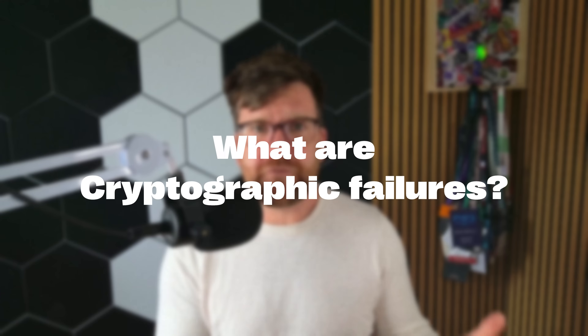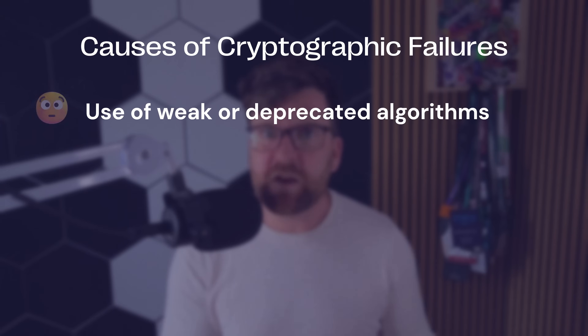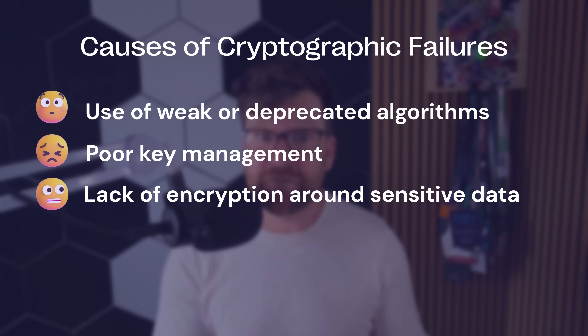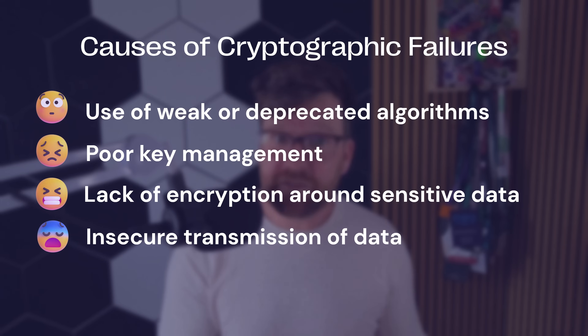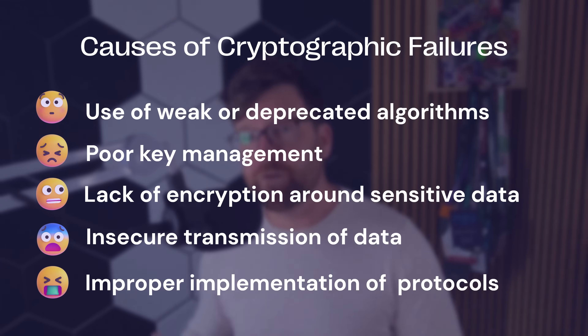As the name suggests, cryptographic failure is when we fail to encrypt something securely and someone else can access sensitive information. How does this really happen? It typically revolves around four different failings: use of weak or deprecated cryptographic algorithms, poor key management, lack of encryption around sensitive data, insecure transmission of data, or improper implementation of cryptographic protocols.